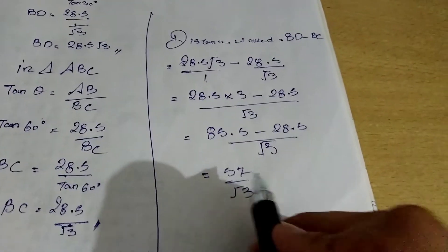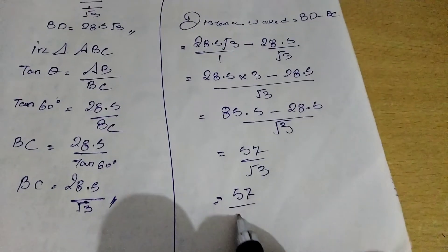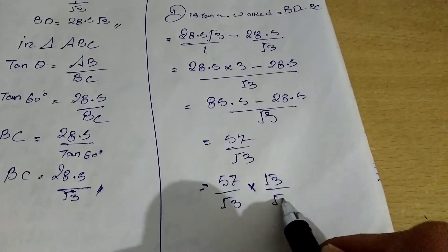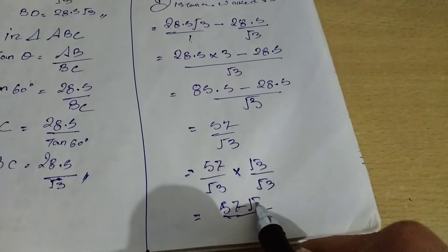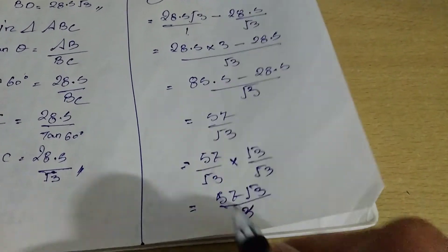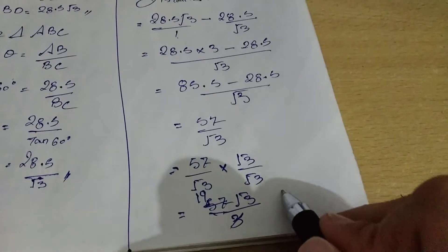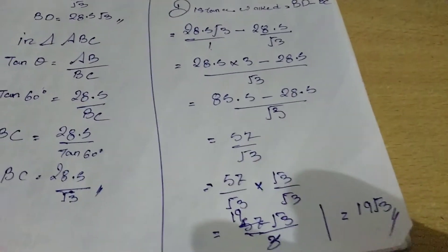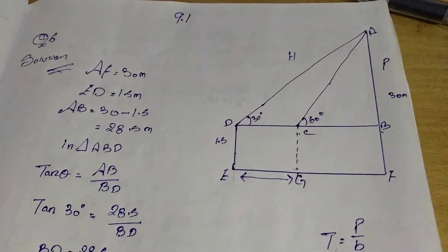Now, since this is in the form of 57 by root 3, you have to rationalize. So 57 by root 3 into root 3 by root 3. So 57 root 3, root 3 into root 3 will be 3. Can we cut this? Yes. 3, 1, 2, 3. 3, 9, 2, 7. So your final answer is 19 root 3. With this, we have completed our question. That is 9.1, question number 6. Thank you.